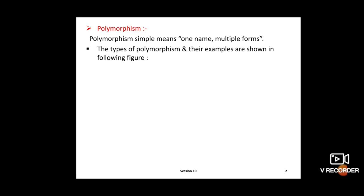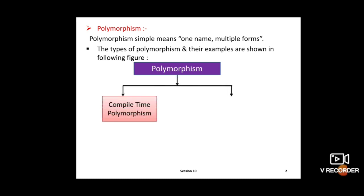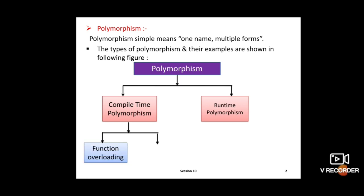The different types of polymorphism and their examples are shown in the following figure. Polymorphism is divided into two types: compile time polymorphism and runtime polymorphism. In compile time polymorphism, examples are function overloading and operator overloading. Runtime polymorphism uses virtual functions.